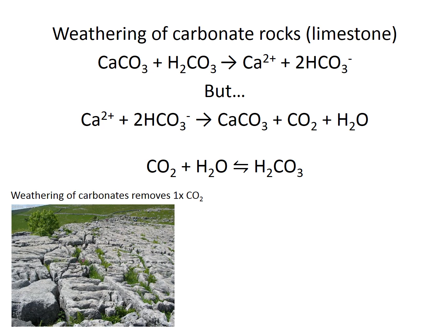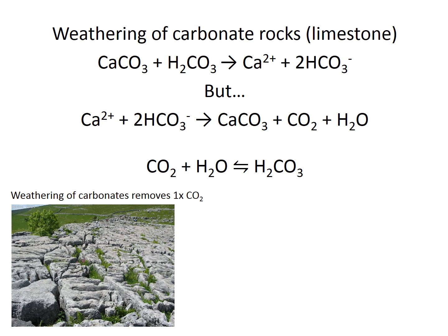When these dissolved ions get into the ocean, we precipitate calcium carbonate. If you take calcium ions and bicarbonate ions — the dominant form of carbon in the ocean — and react those together, we form calcium carbonate again. This is the kind of thing that forms corals, shells, coccolithophores, and fish faeces, which contain a lot of calcium carbonate. That reaction actually releases carbon dioxide.